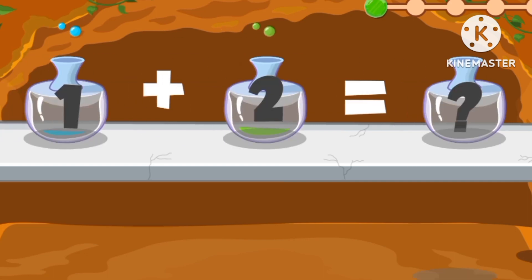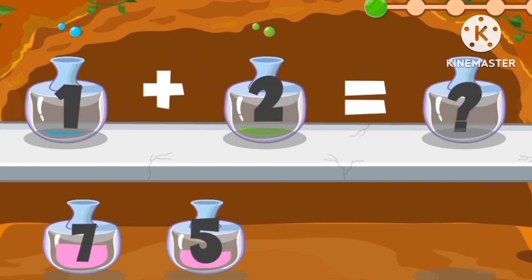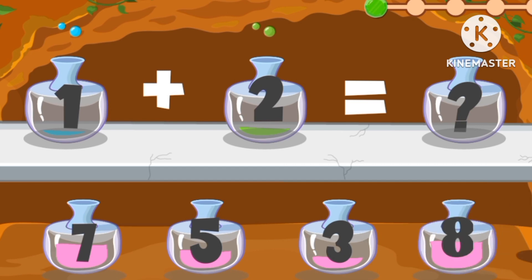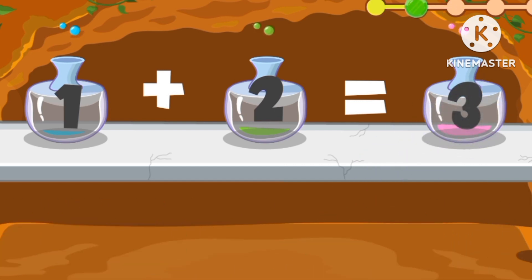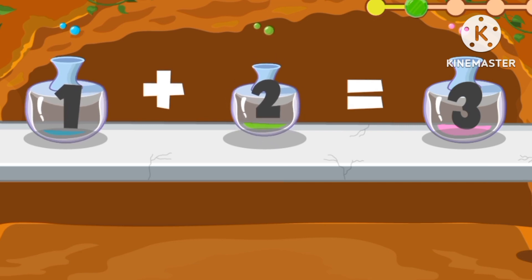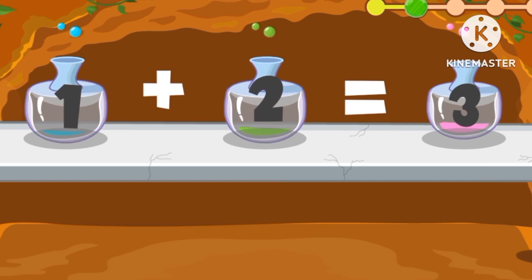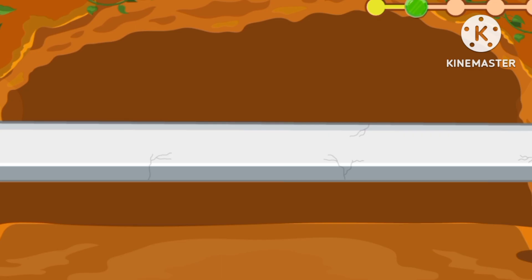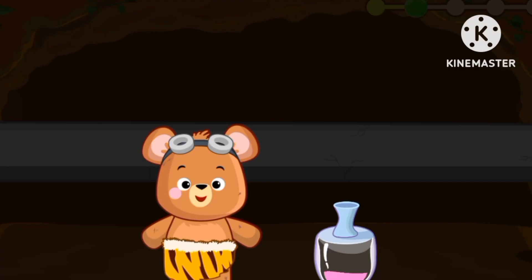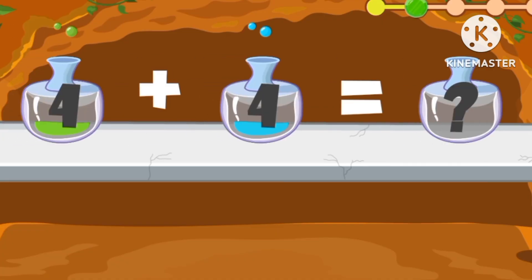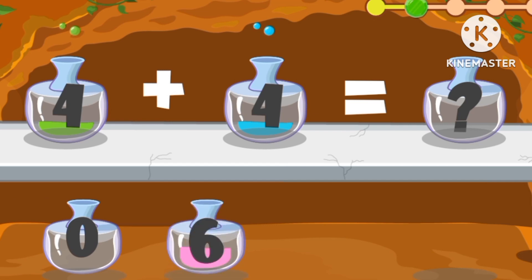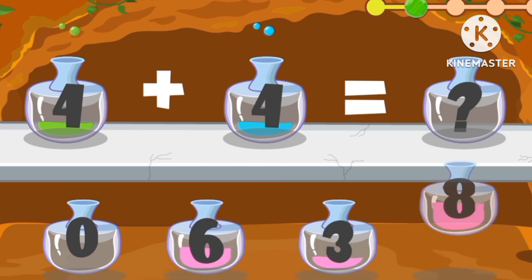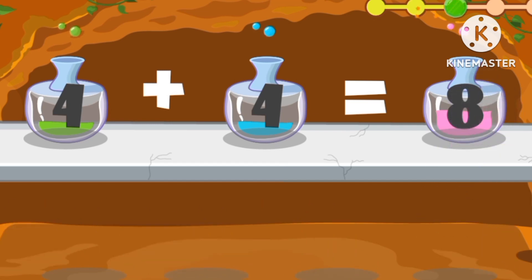Five plus three equals eight. What's one plus two? It's number three. One plus two equals three. What's four plus four? Is it zero, six, three? It's eight.